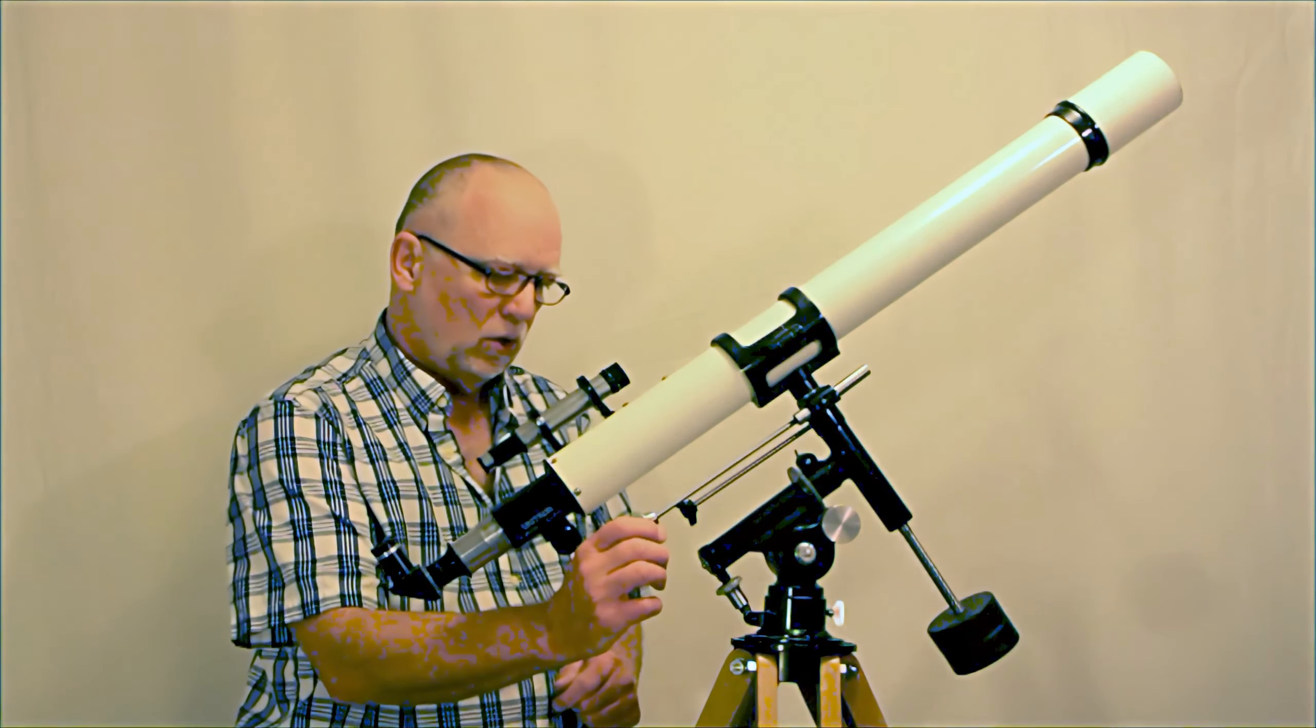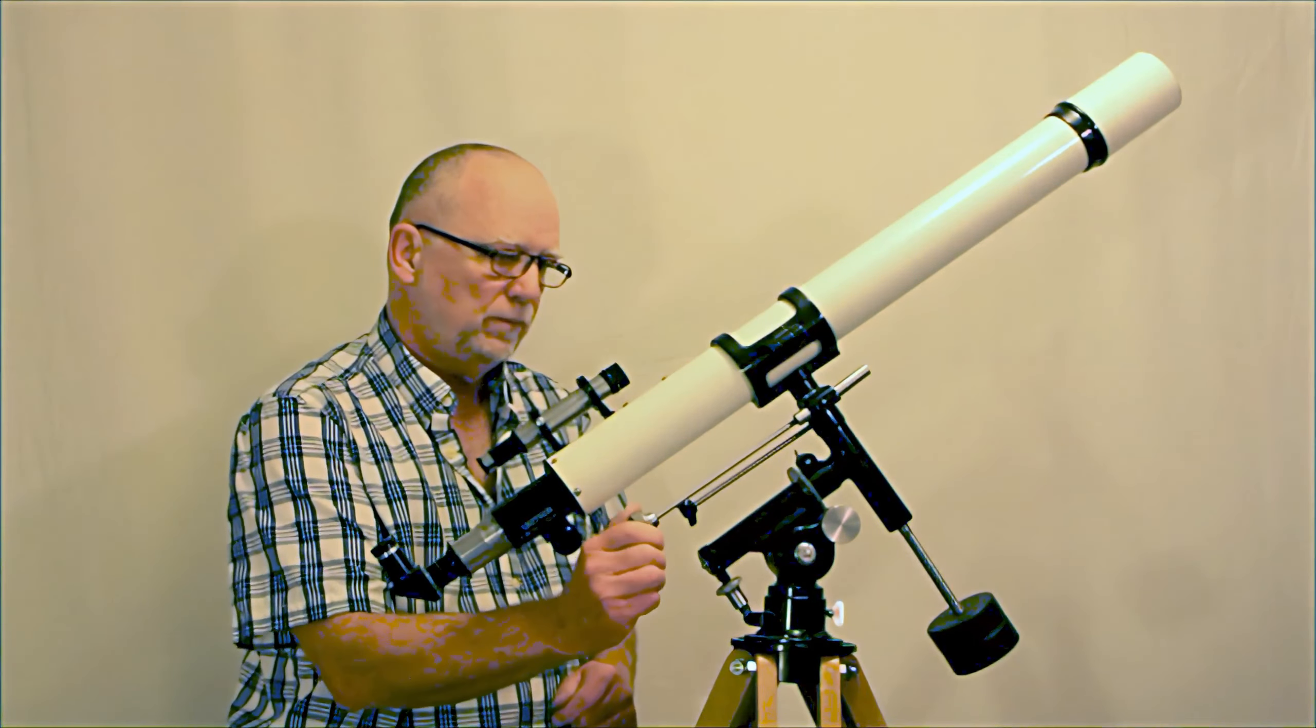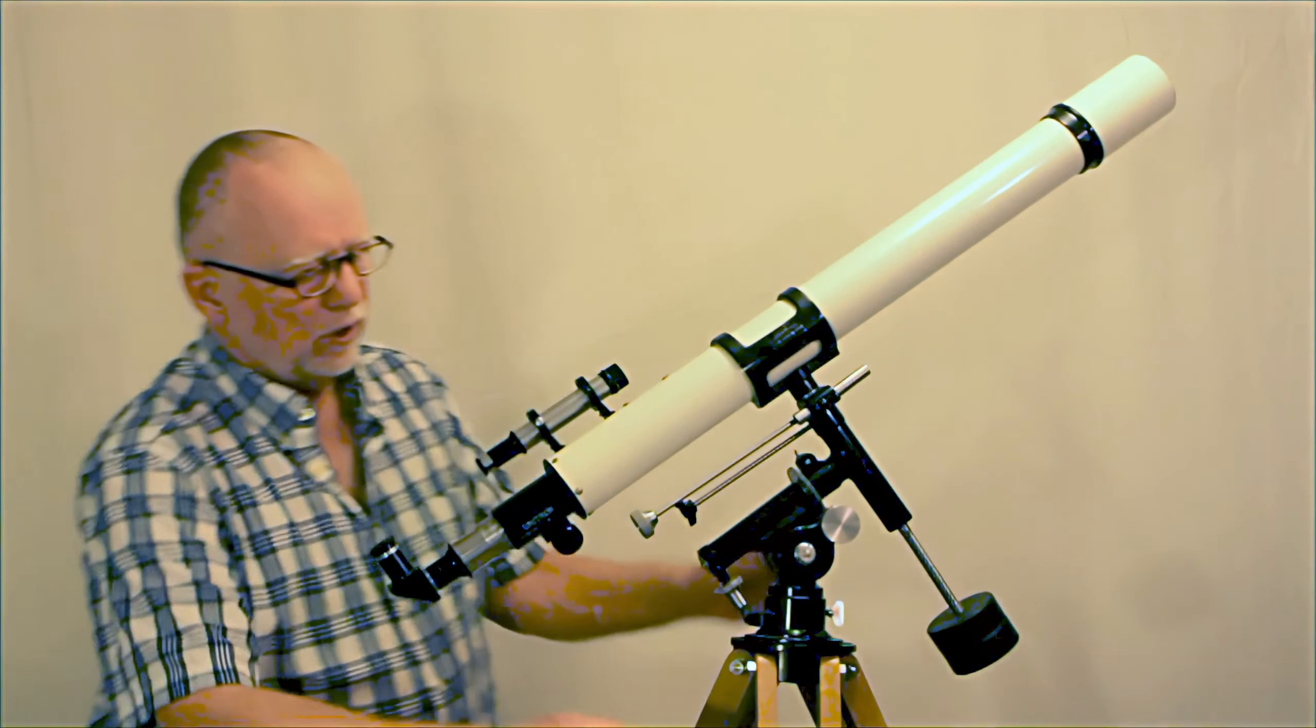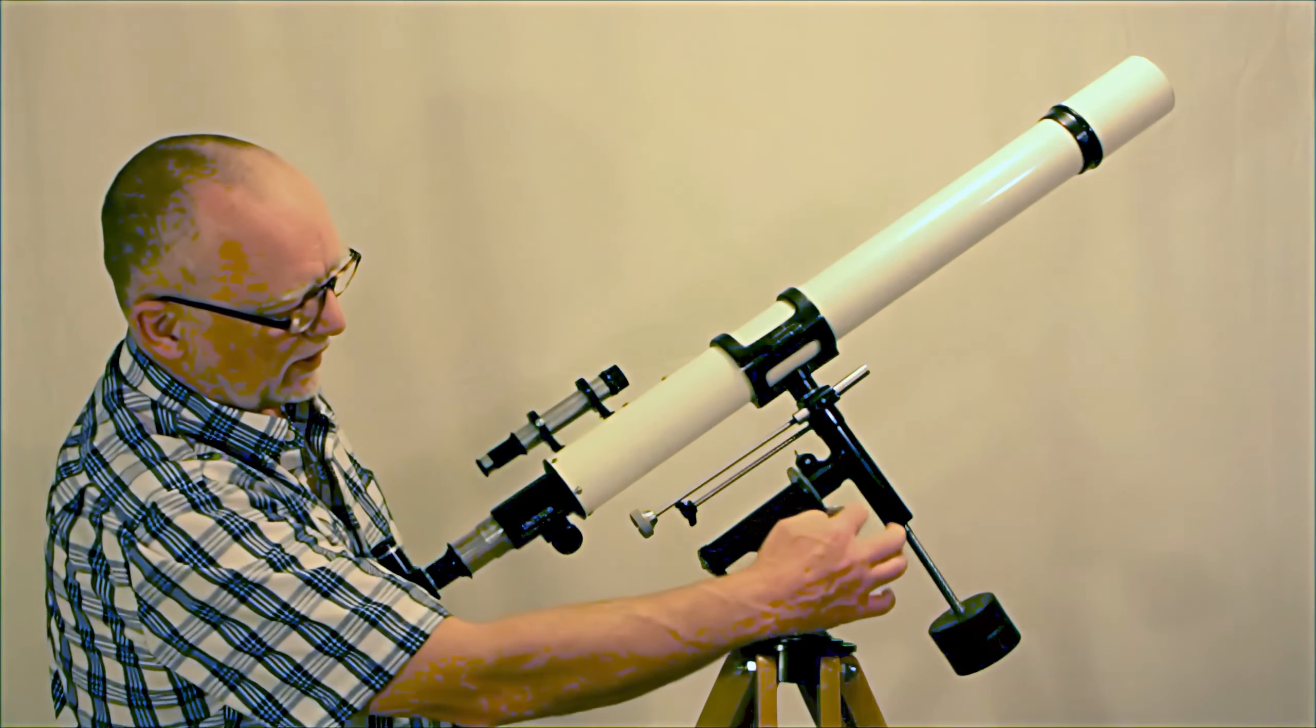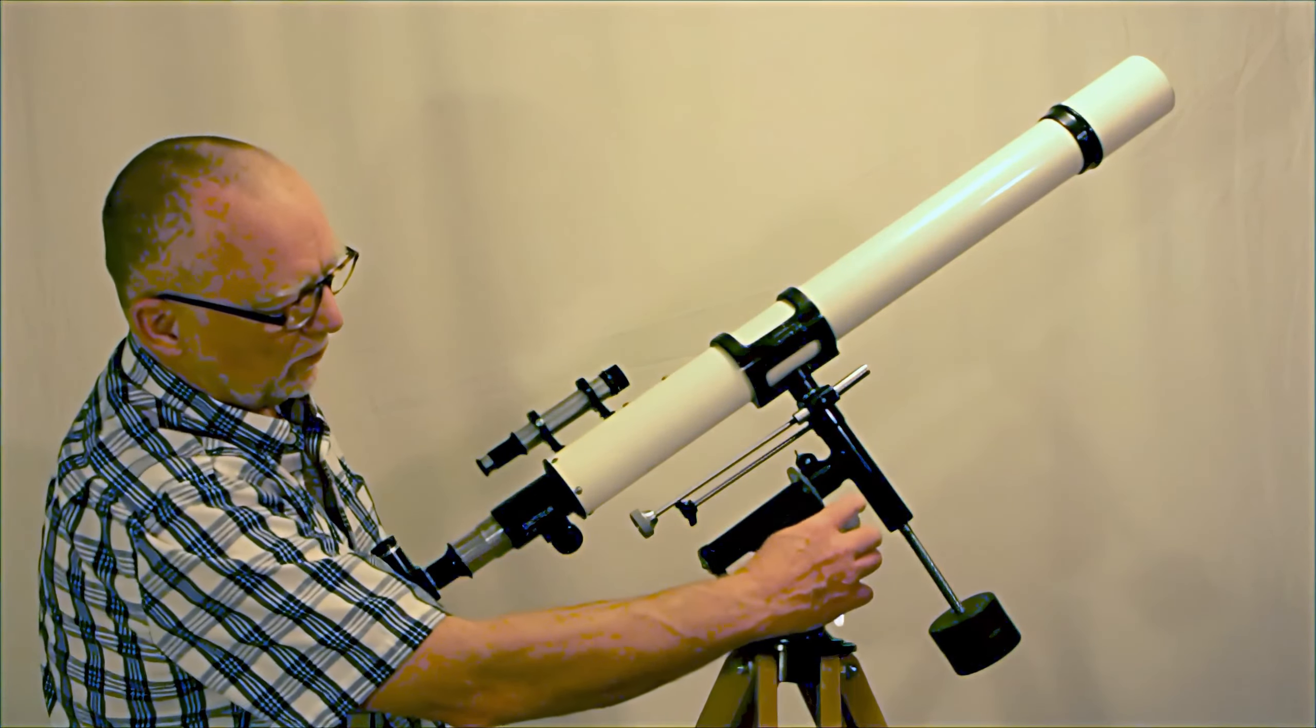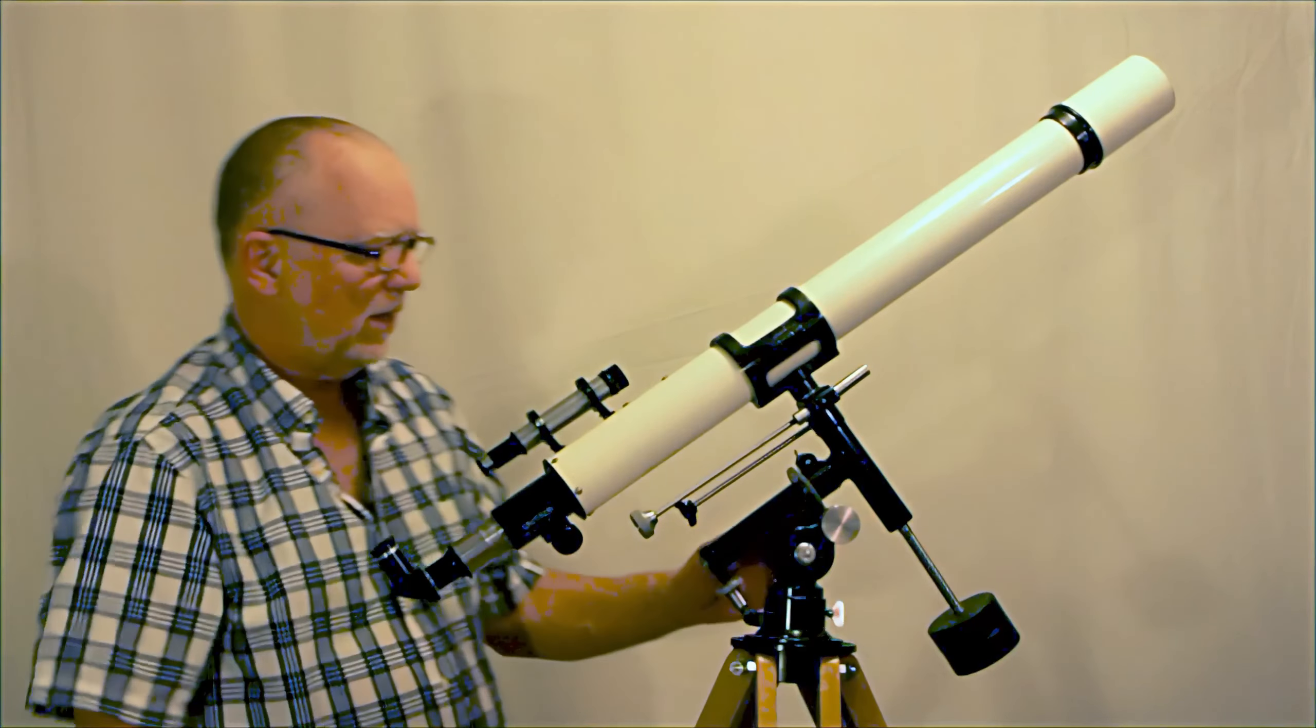So it's like all Unitron Equatorial mounts. It's got a slow motion. It's the slow motion in declination. The slow motion in right ascension is this. It's another thing that dates this telescope. Typically they had a way of at least attaching some sort of a remote kind of a cable. And this doesn't have such a device, so it's strictly that. That's how you would track.